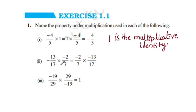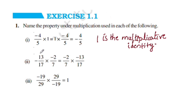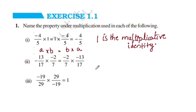Negative 13 by 17 into negative 2 by 7 is equal to negative 2 by 7 into negative 13 by 17. Then A into B is equal to B into A. This property is the commutativity of multiplication.